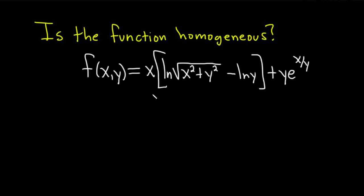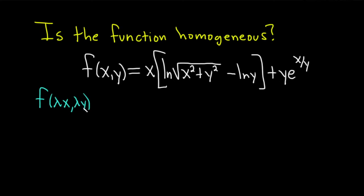We call a function homogeneous of degree n if whenever you plug in lambda x for x and lambda y for y, you end up with lambda to the n times f of x, y. If this happens, we say the function is homogeneous of degree n.